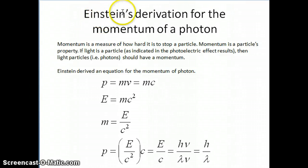Coming from that idea that light is basically a stream of particles, Einstein then decided to derive an equation for the momentum of a photon. Momentum, for those of you who have not taken physics, is basically a measure of how hard it is to stop a particle. Momentum is a particle's property. If it's a particle, as indicated in the photoelectric effect, then light particles or photons should have momentum, which is the mass of that particle times its velocity. This quantity is basically a measure of how difficult it is for us to stop that particle once it's in motion.